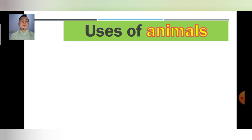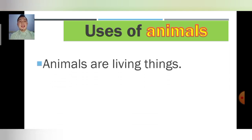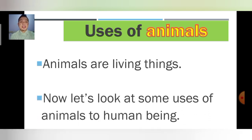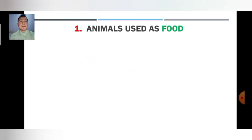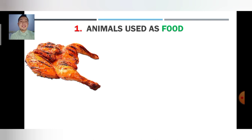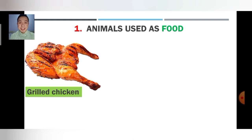Animals are living things, okay? Now let's look at some uses of animals to us as human beings. Number 1 listed here: animals used as food. Oh, I like to eat — I'm very hungry this time. Grilled chicken! Who likes to eat grilled chicken? Great! I like to eat too.